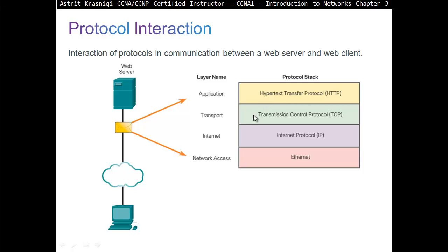That message will go through the transport layer. The transport layer decides how big the message is — can we deliver the whole message or do we have to split it? If we have to split it, the transport layer splits it, and at that point it's called a segment. The transport layer identifies what kind of application it is by adding port numbers: source port number and destination port number. For example, destination port number for web is 80, or secure web is 443. As the message goes down through the layers, this process is called encapsulation.